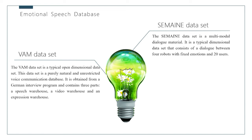The SEMAINE dataset is recorded in a professional recording studio and consists of four emotion dimensions: valence, arousal, expressivity, and power.